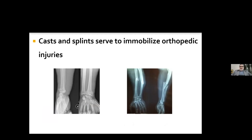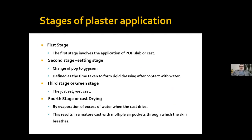Casts and splints are also used in treatment of sprains, soft tissue injuries, tendon lacerations, some inflammatory conditions like arthritis, tendinopathies, tendinitis, to give rest to the part, and also to correct deformities. Plaster of Paris is a hemi-hydrated form of calcium sulfate. When we wet it, it becomes hydrated calcium sulfate and heat is released — known as an exothermic reaction.